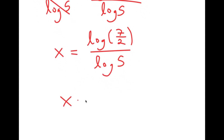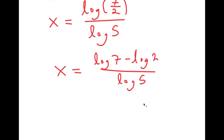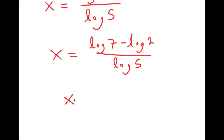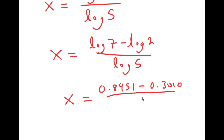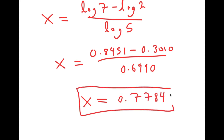This turns into log of 7 minus log 2, over log 5, which is equal to 0.8451 minus 0.3010, over 0.6990. And this is equal to 0.7784. So this is my answer.